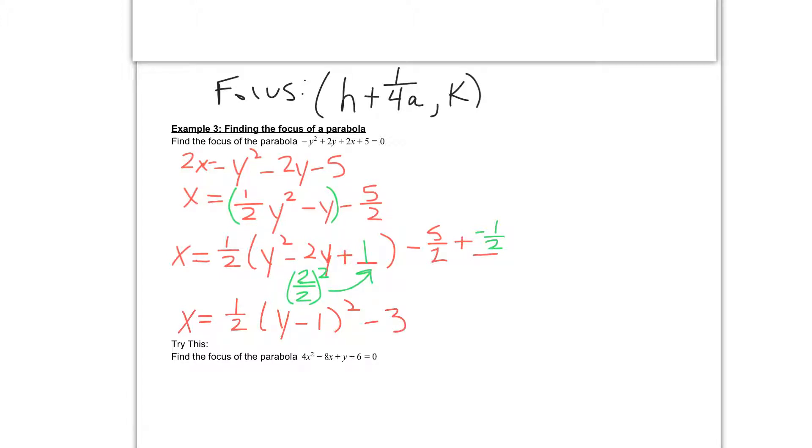Next up I need is to find the focus. So in order to find my focus, I need to know what my h value is, my a value, and my k value. So if I take a look at my equation below, I have x equal to 1 half y minus 1 squared minus 3.